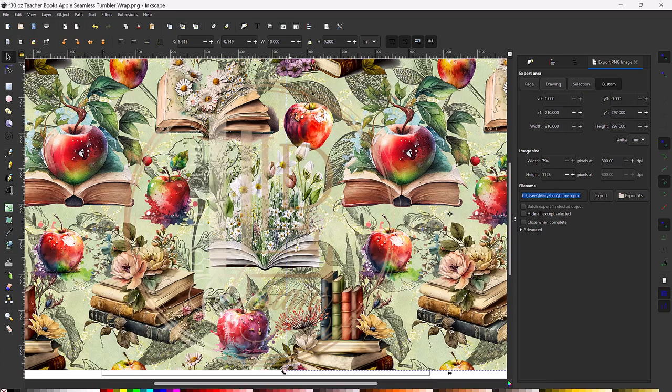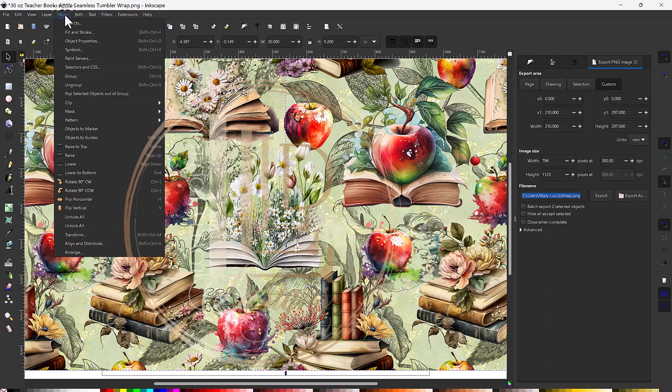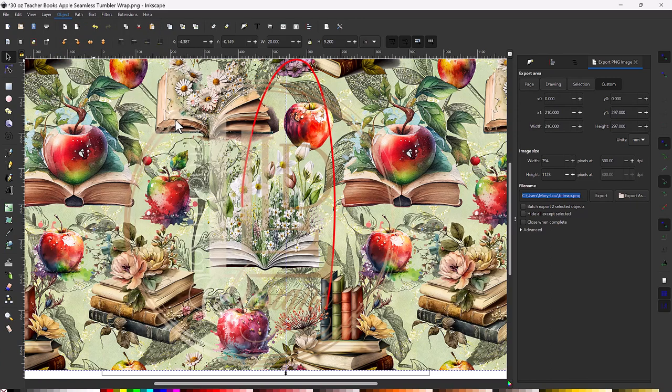To merge the layers into one, select both layers by clicking one layer, holding the shift on your keyboard and clicking the other layer. You will notice the marching ants at the seam, which tells you these are two separate images. Go to Object in your top menu and select Pattern and then Objects to Pattern. You will notice the marching ants down the middle of the seam have now disappeared, showing you this is now one merged image.